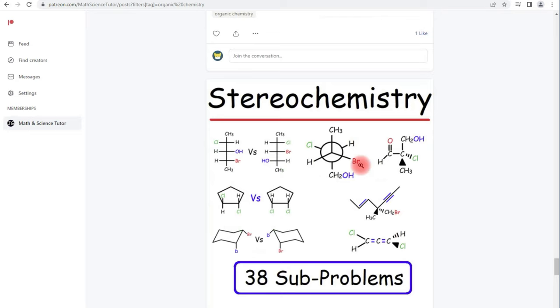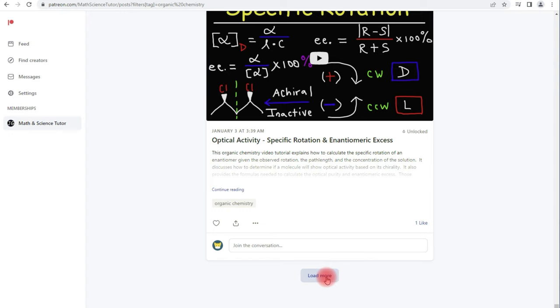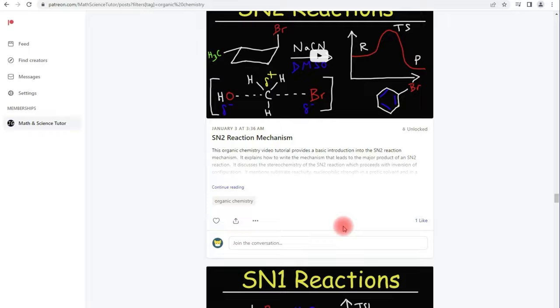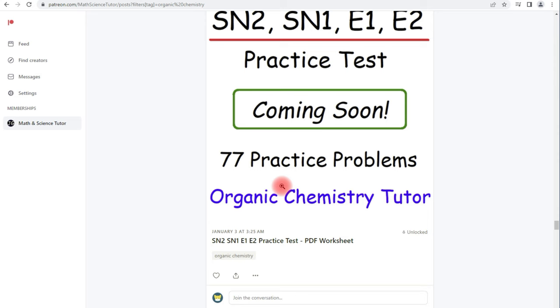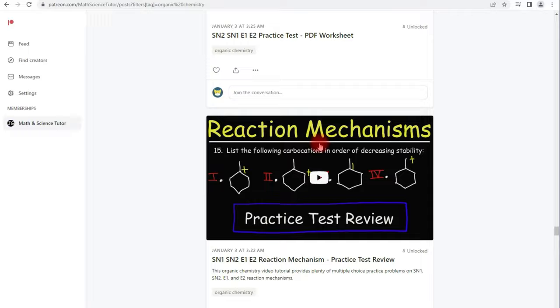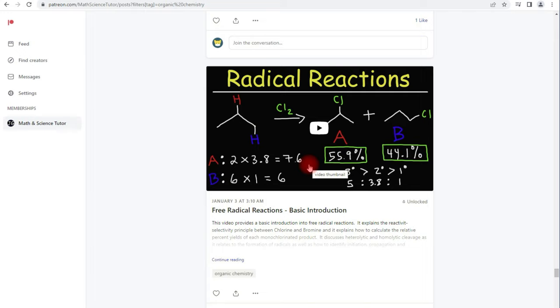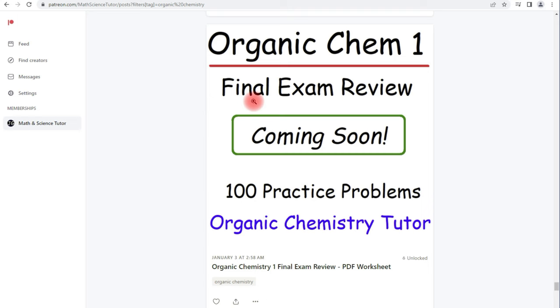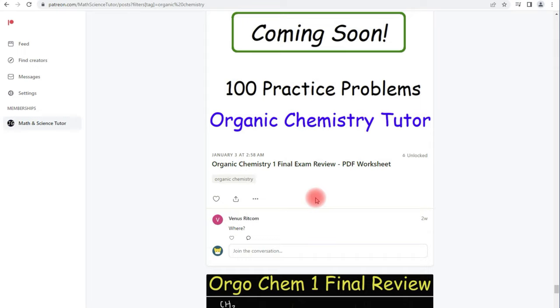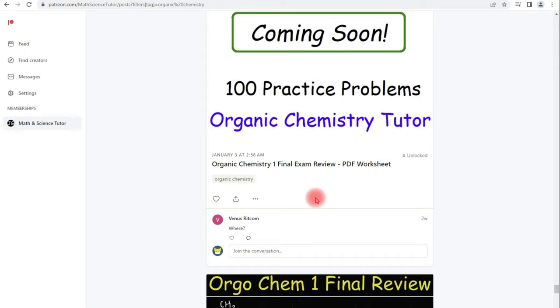Now, I have other videos: stereochemistry, specific rotation, SN1, SN2 reactions. There's a practice test on that, 77 practice problems. Here's the video with the practice test, but I haven't done the worksheet yet. We got alkene reactions, alkyne reactions, alcohol reactions, radical reactions, and then my Organic Chemistry 1 final exam review video. The video is actually finished, but the worksheet is coming soon. Let me know for those of you who are actually interested in getting these worksheets, do you prefer to watch a six-hour final exam review video or do you prefer to have a printout of the 100 practice problems and work through it at school? Let me know in the comment section below.